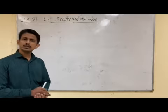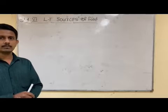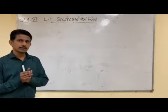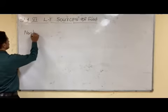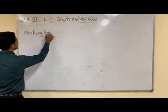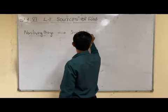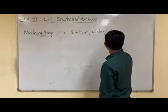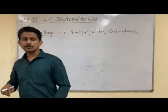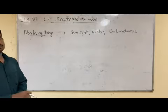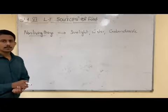Good morning. In the case of green plants, most of them are preparing their own food. These green plants prepare their food with the help of some non-living things — sunlight, water, and carbon dioxide. These are the non-living things used by plants to prepare their food. So when we consider green plants, they are producing their own food.